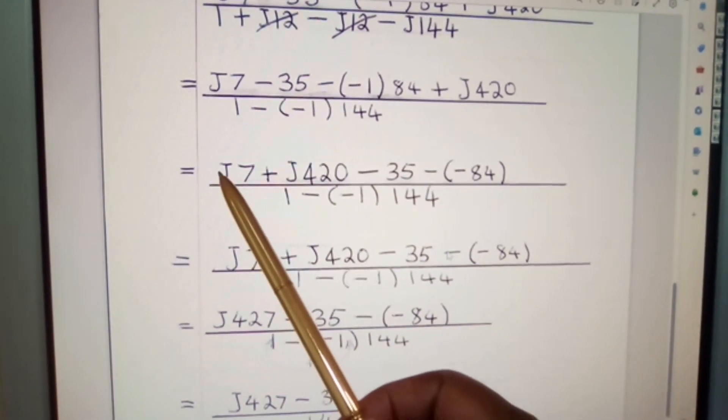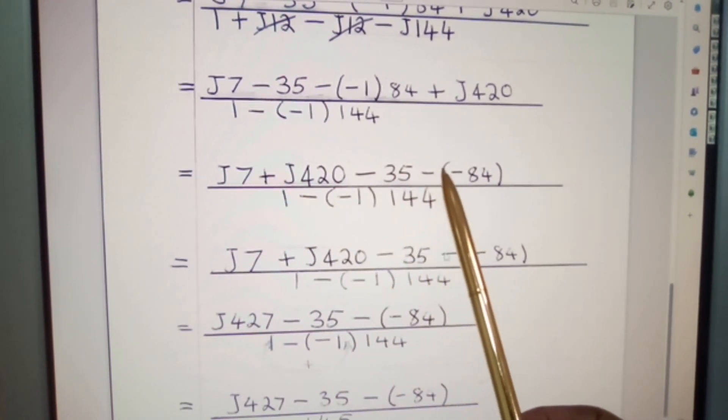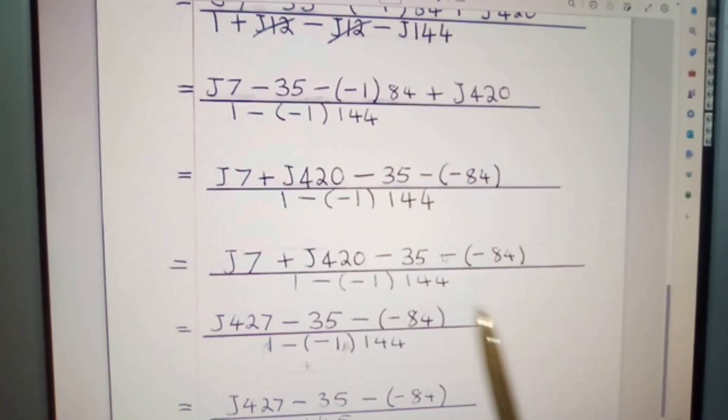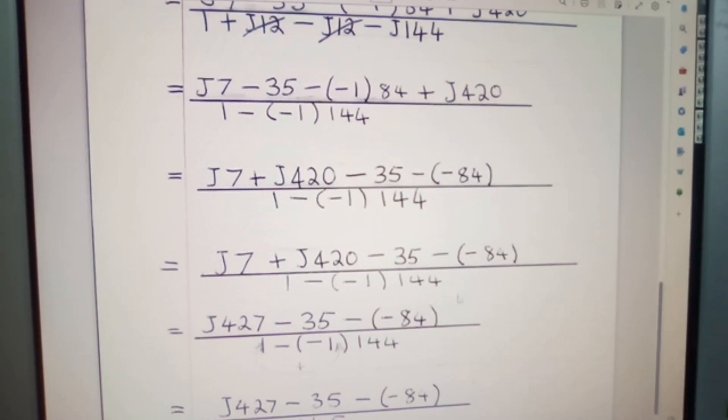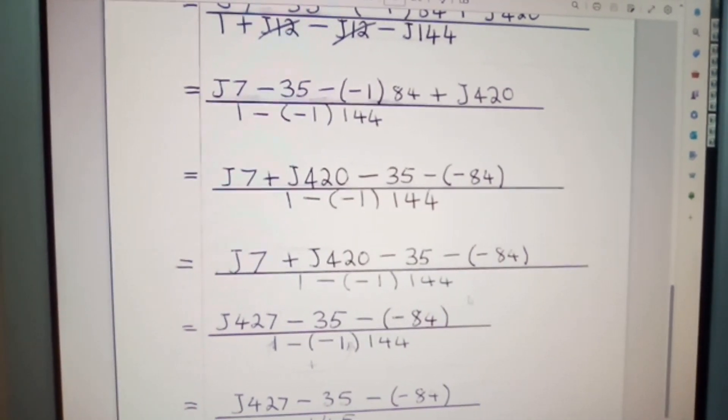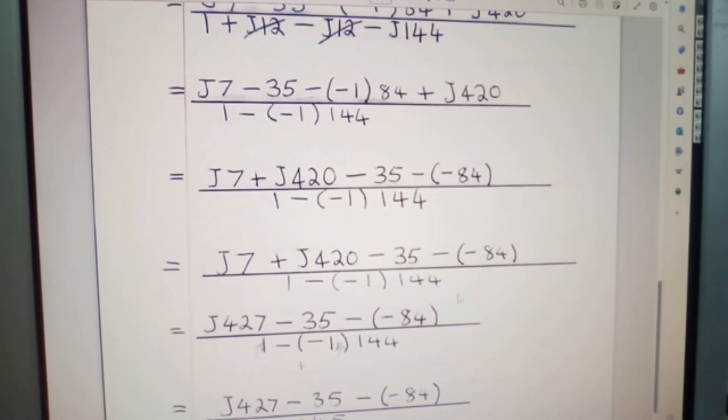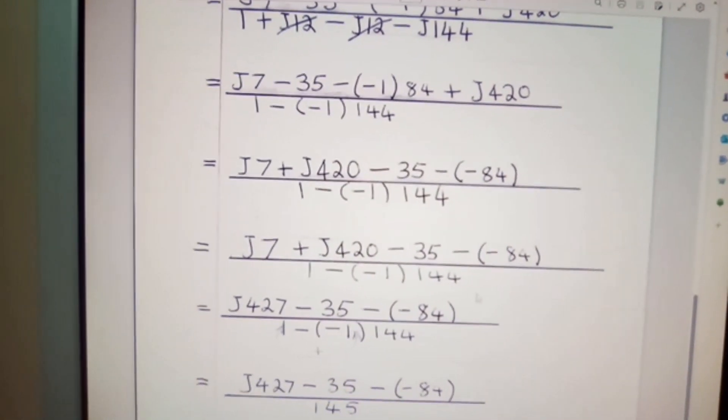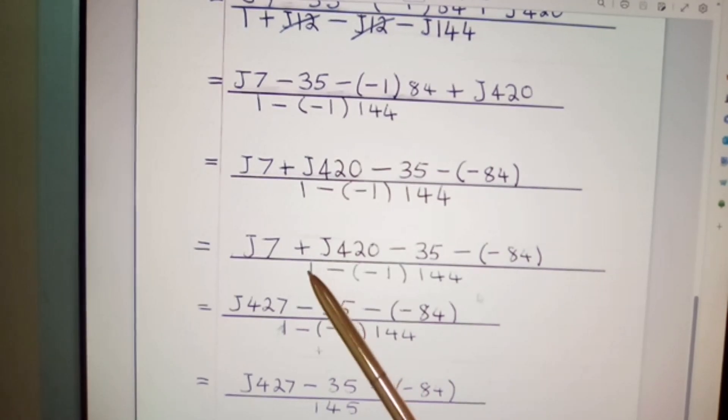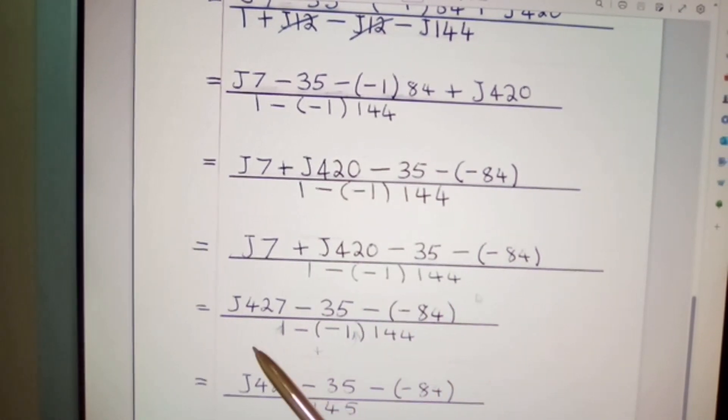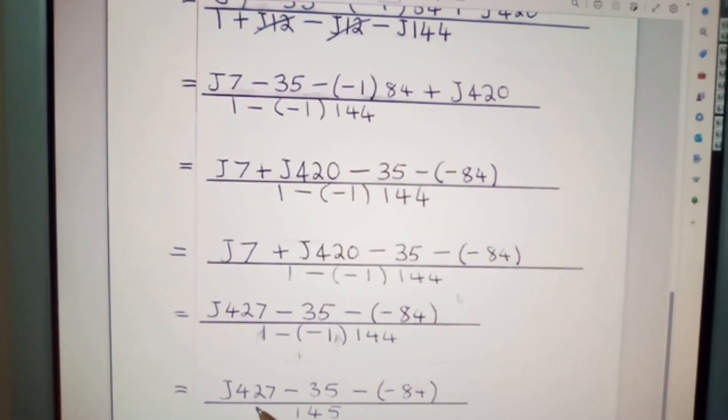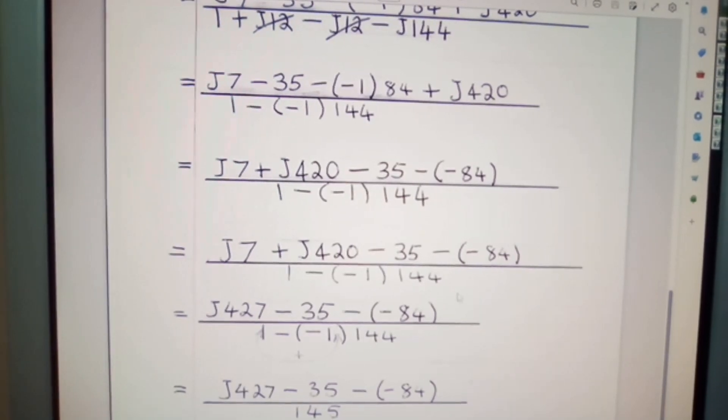I'm not going to run through all of these, but you can again see here J7 minus 35 minus minus 1, 84 plus J420 over 1 plus J12 minus J12. Now, you see these two have cancelled out. And I've now written it out in J7 minus 35 minus minus 1, 84 plus J420 minus J144 over 1 minus minus 1, 144. You have to get yourself acquainted with the mathematical process and follow it on. That then leaves us with J7 minus 35 minus minus 84 plus J420 over 1 minus minus 144. I've extended it further and reduced it even further still. And remember, a minus and a minus makes a plus. I apologize in the early stages for any errors I've made. I'm not quite perfect yet, but I'm working on it.